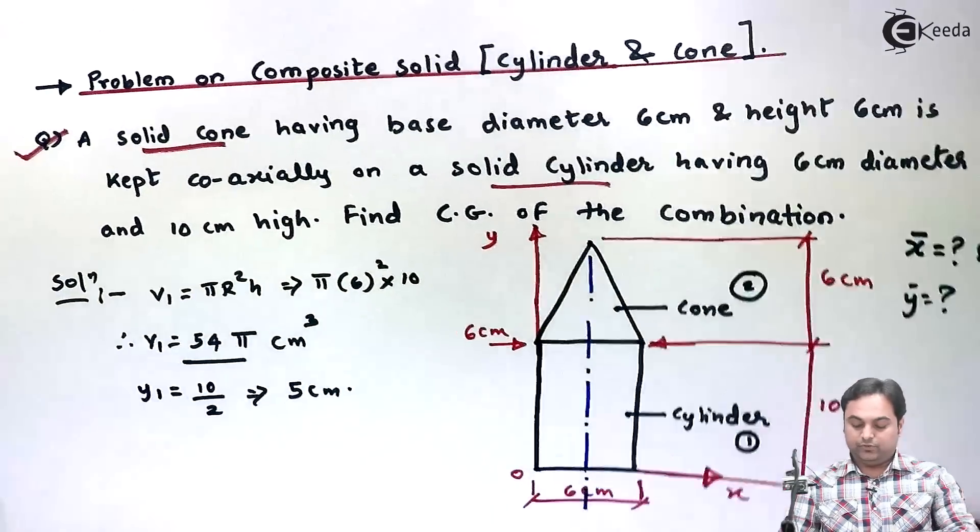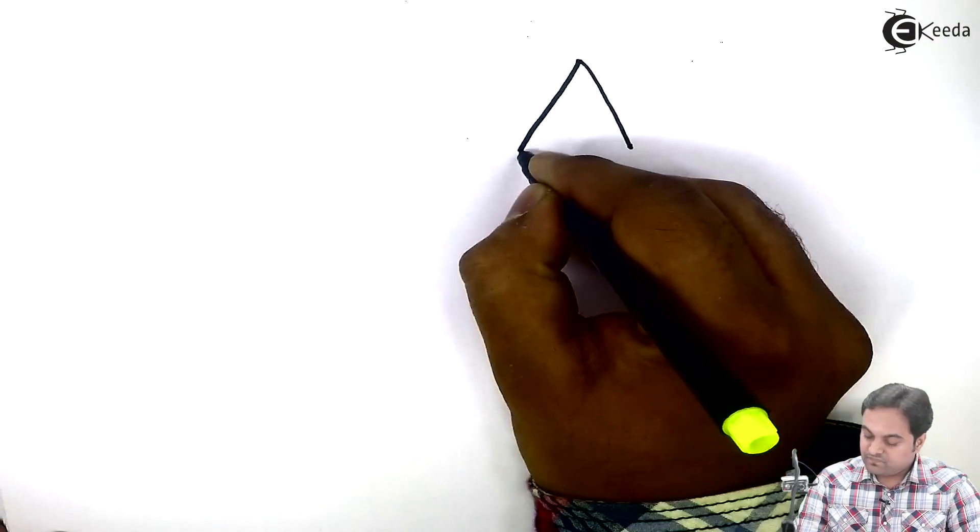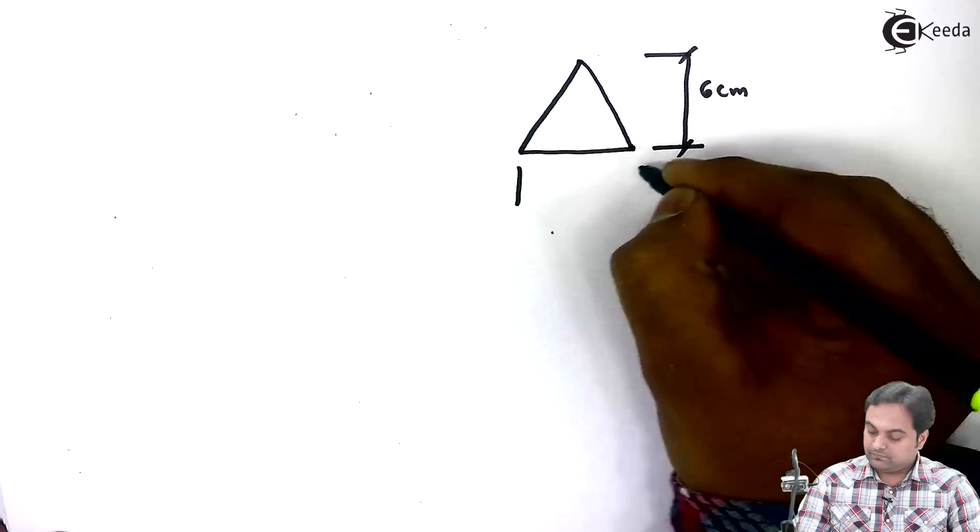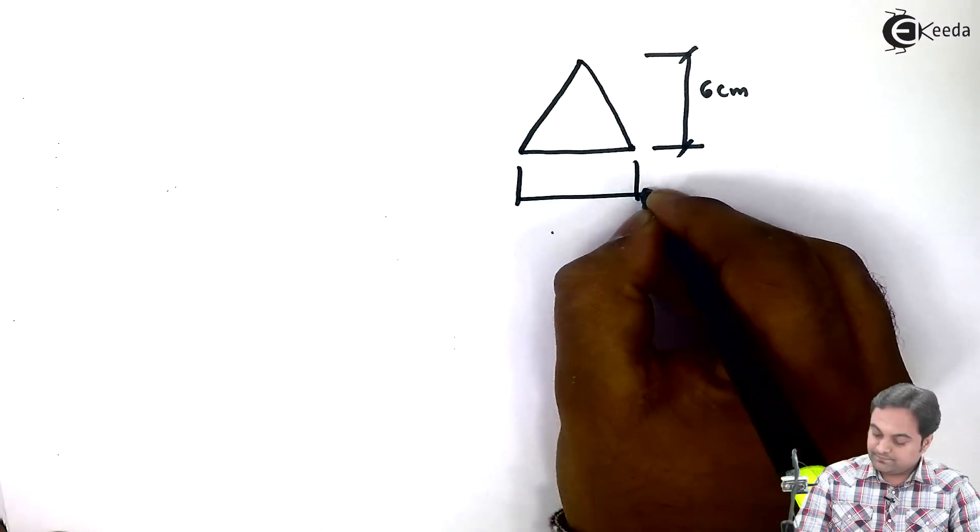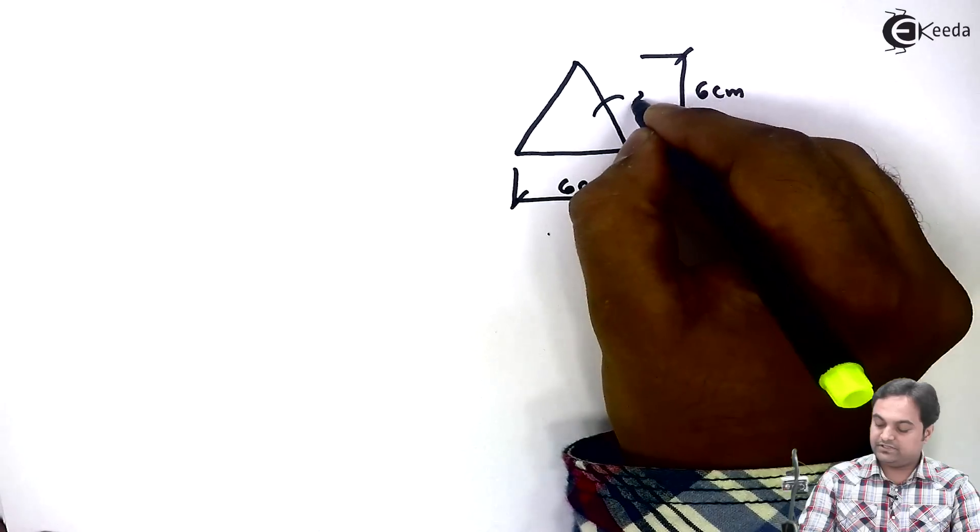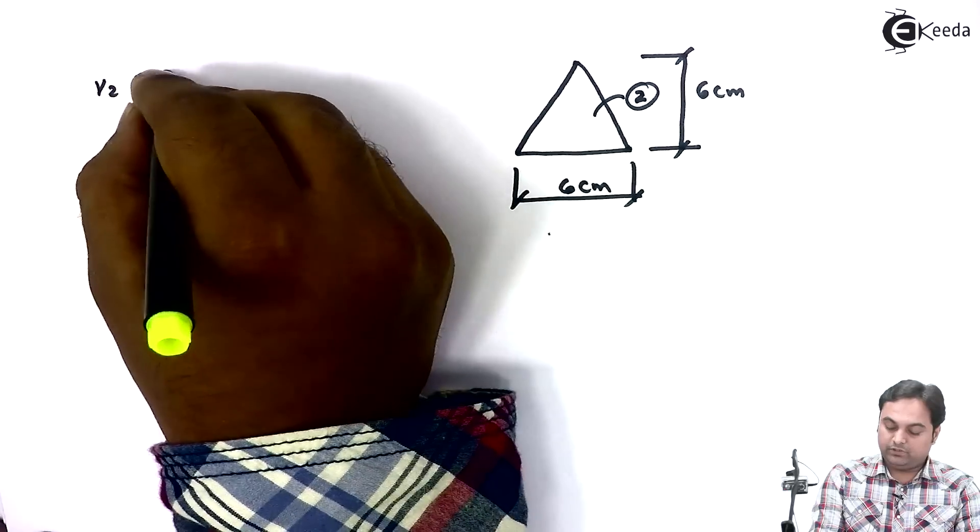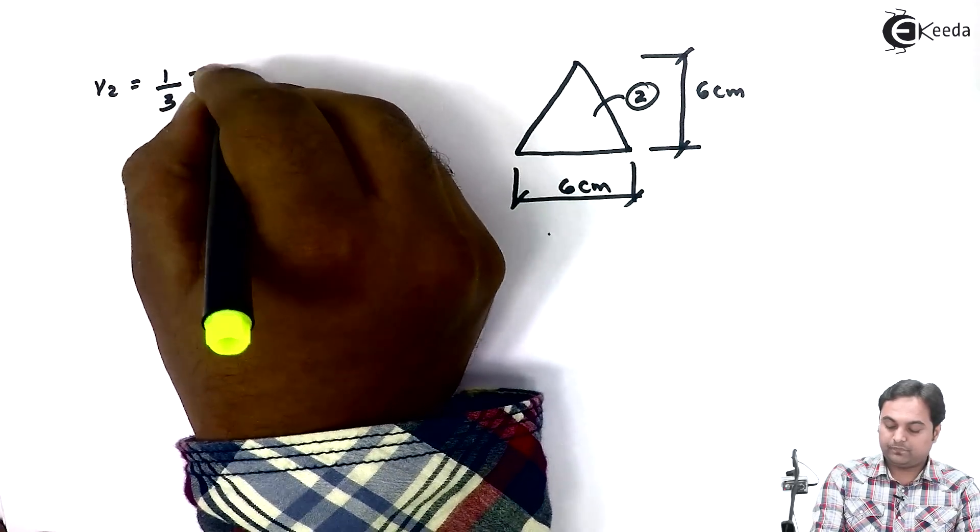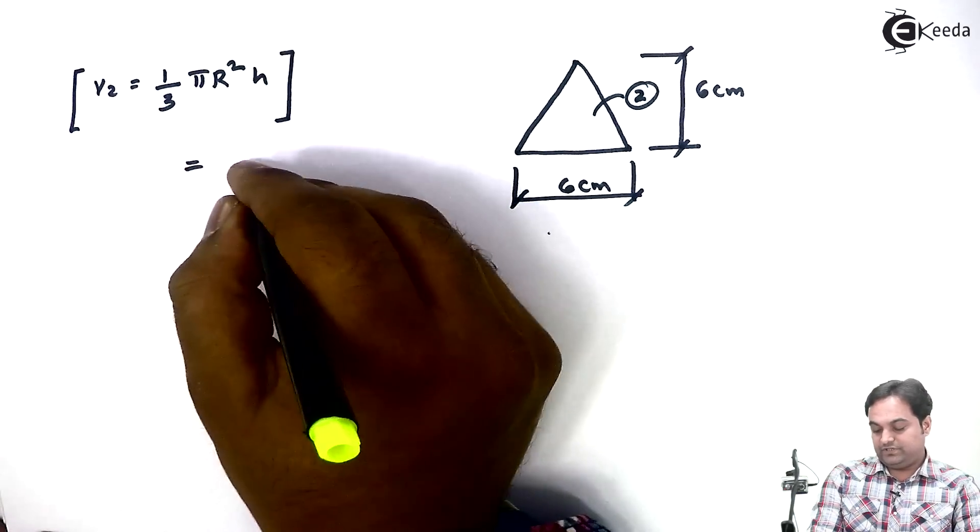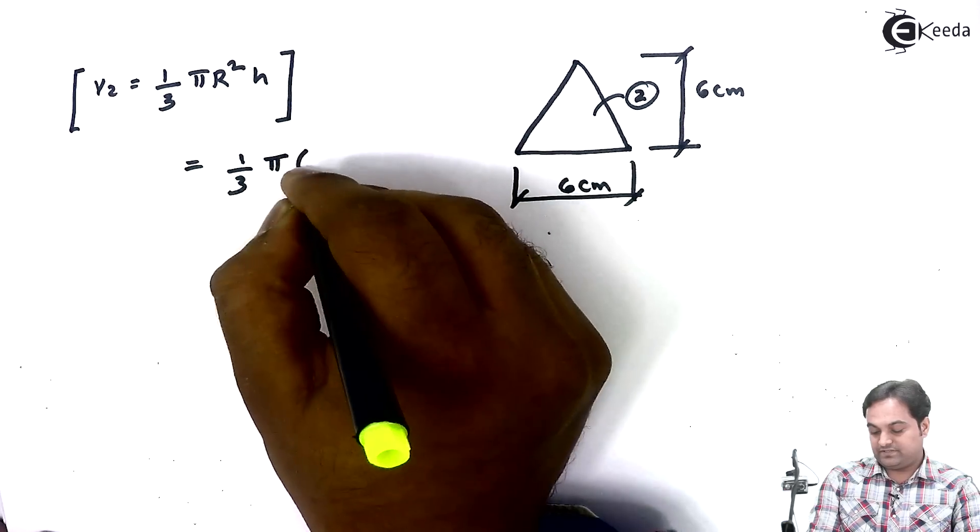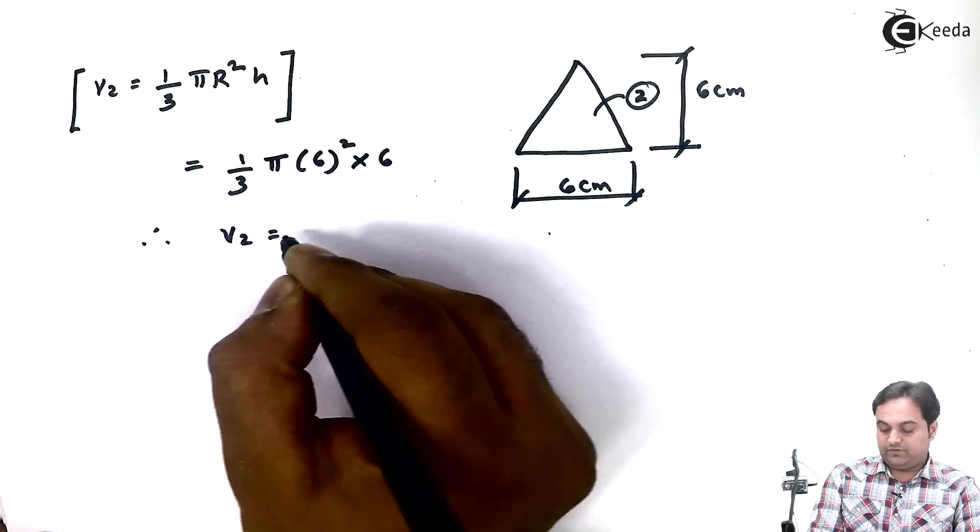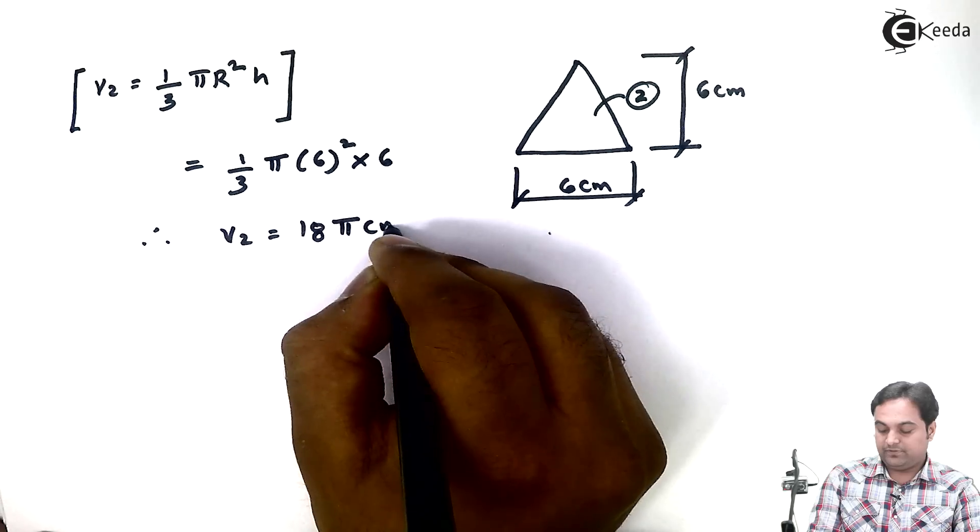After this I'll take the cone. Height of the cone is 6 centimeter and the diameter of the cone is also 6. So I'll say that cone for us is the second solid. V2 will be equal to 1 by 3 pi r square h. So it is equal to one third of pi radius is 6 square into 6. Therefore V2 is equal to 18 pi cm raised to the power 3.